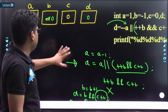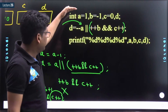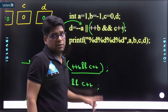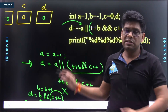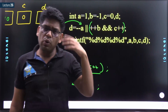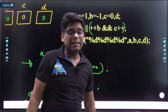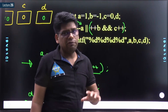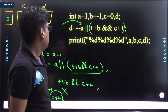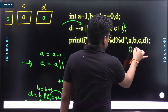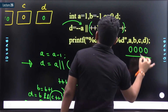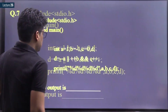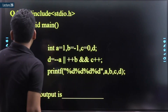So the value of d is 0, b is 0, a is 0, and c is never incremented so c remains 0. All values are 0 after execution. The output of question 7 is 0, 0, 0, 0. The more you practice these types of questions — involving short-circuit, modify operators, logical AND and OR — the better you will get.